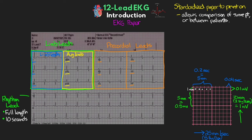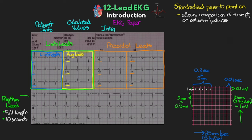At the top of our paper we usually have additional information. The top left typically has patient information. The top middle gives calculated values for our different measurements — the rate, the PR interval, the QRS complex width, our axes, and more — which I'll cover in more detail in the next lesson. The top right usually has the computer's interpretation, and once manually reviewed, the reviewer can make annotations or changes for their own interpretation.